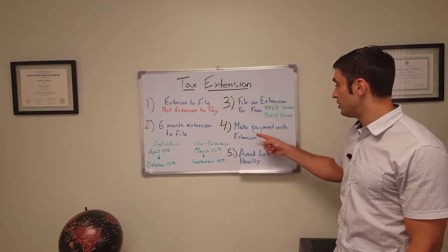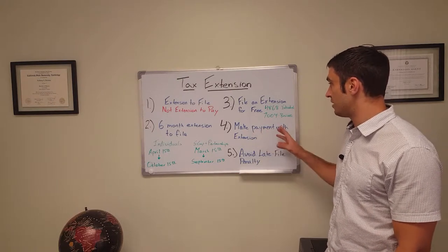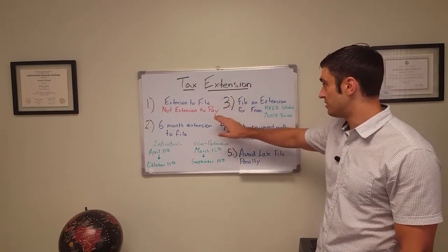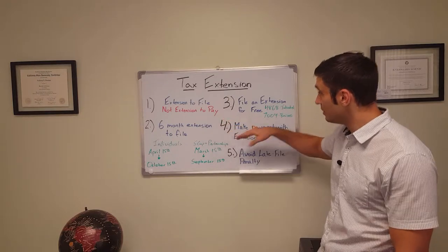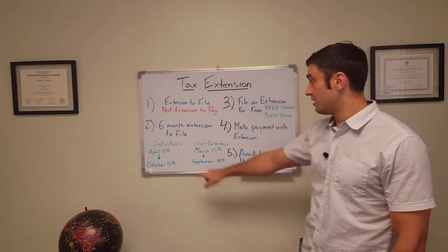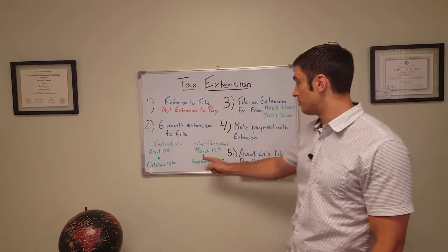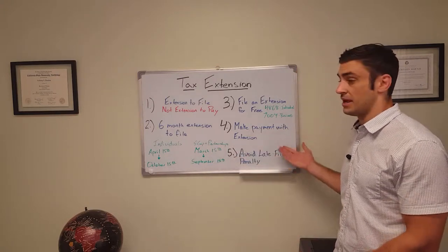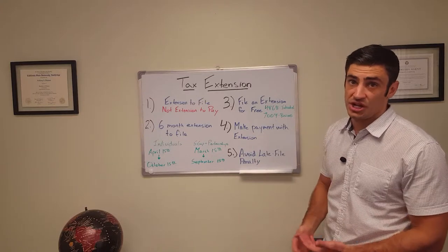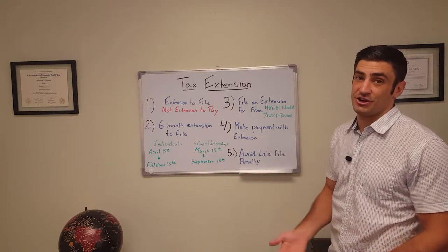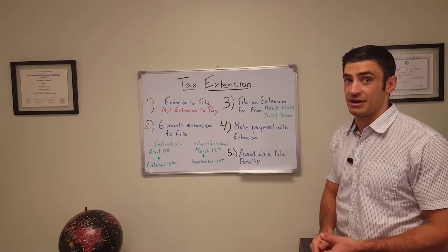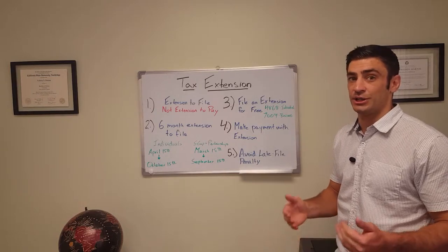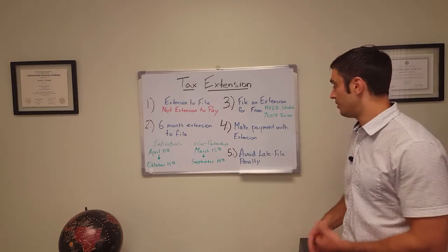Number four I have, you can make a payment with the extension. So again, it's an extension to file, not to pay. So you can pay when you file the extension by April 15th if you're an individual or March 15th if you're an S-Corp or partnership, that's one way to pay. If you don't want to pay with the extension, I do have various other methods of how to pay the IRS in a previous video, which again, I will include a link in the description below.